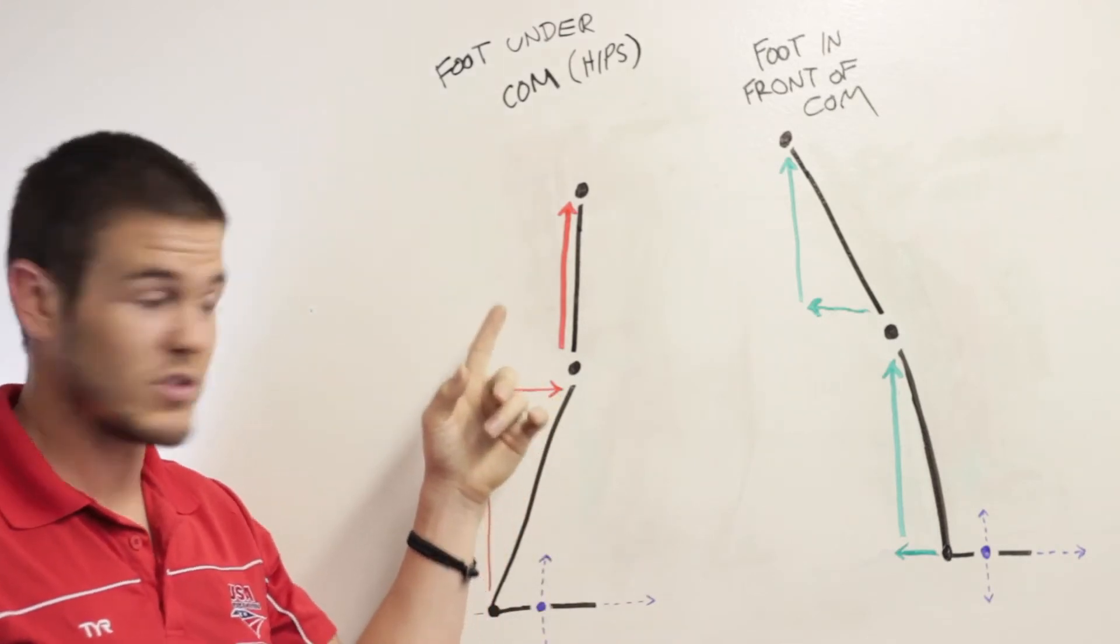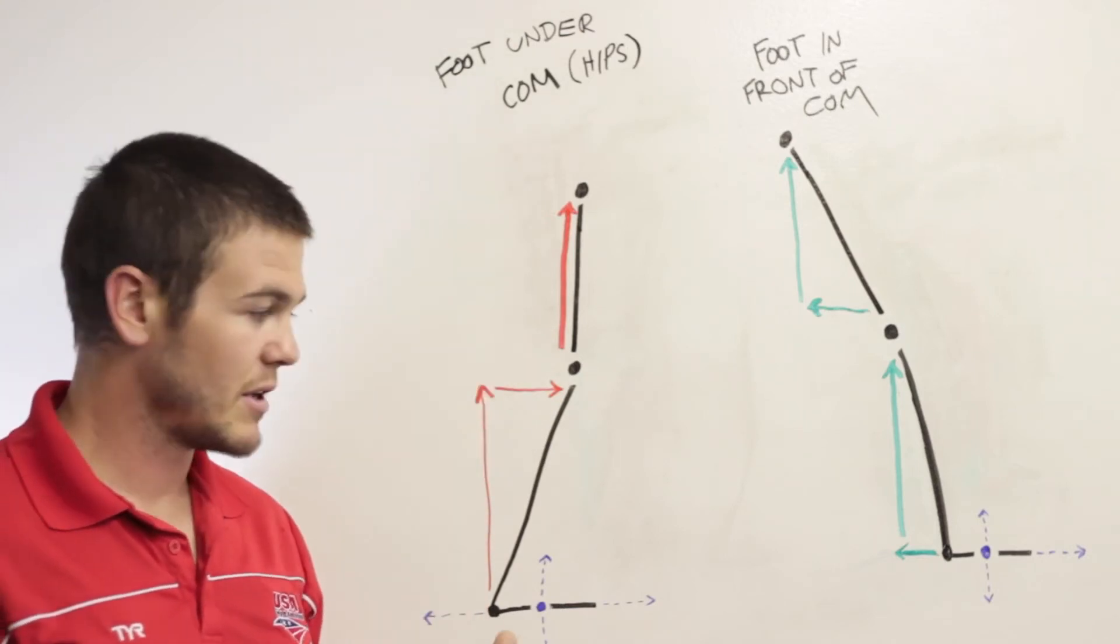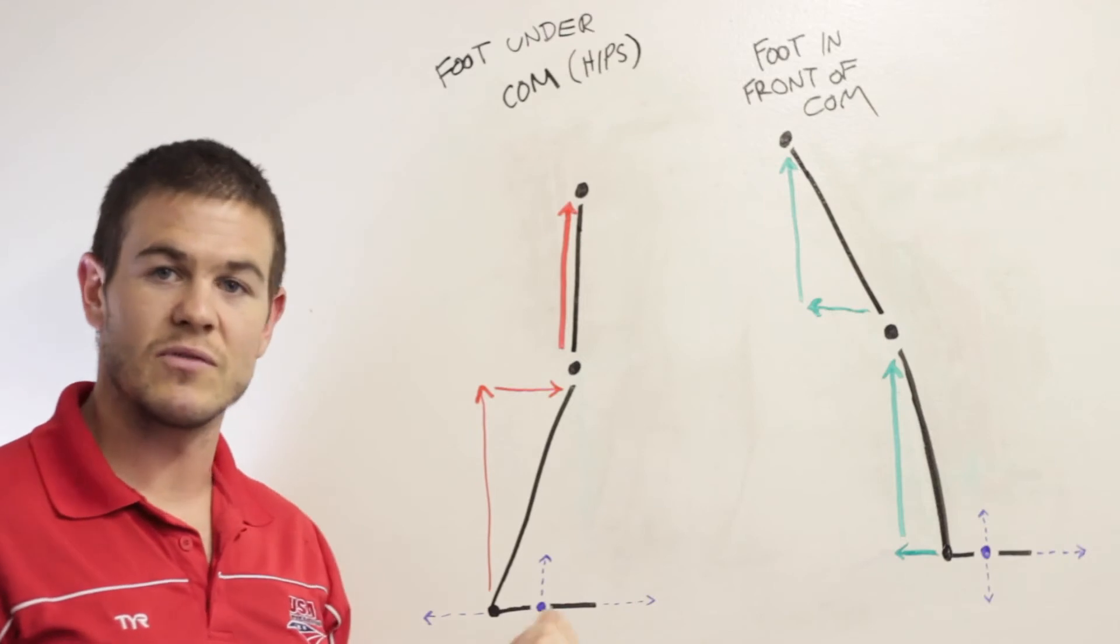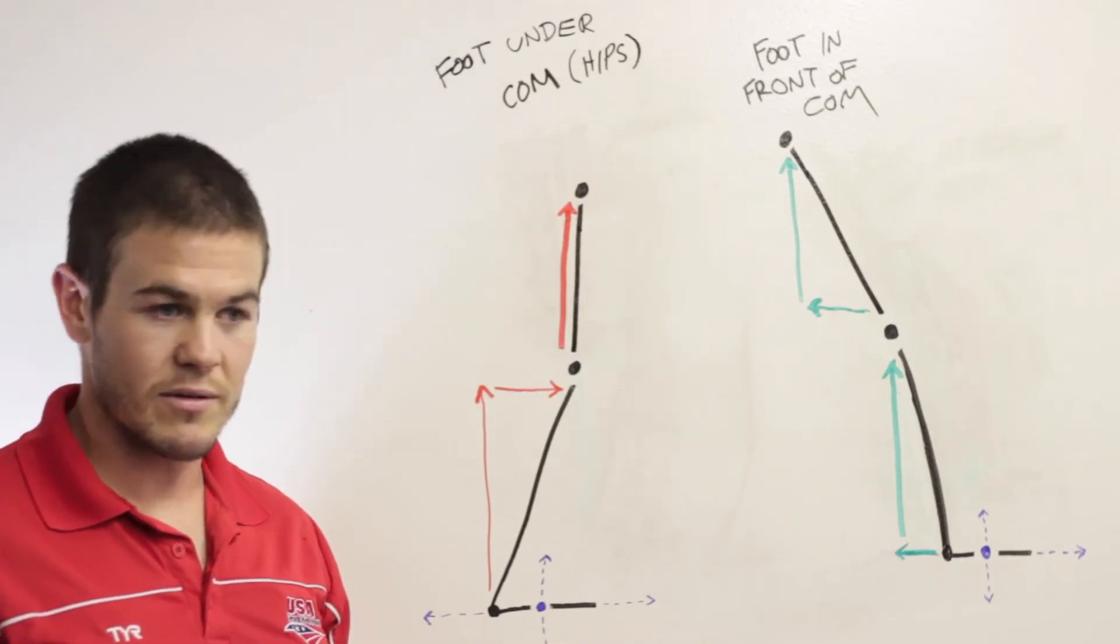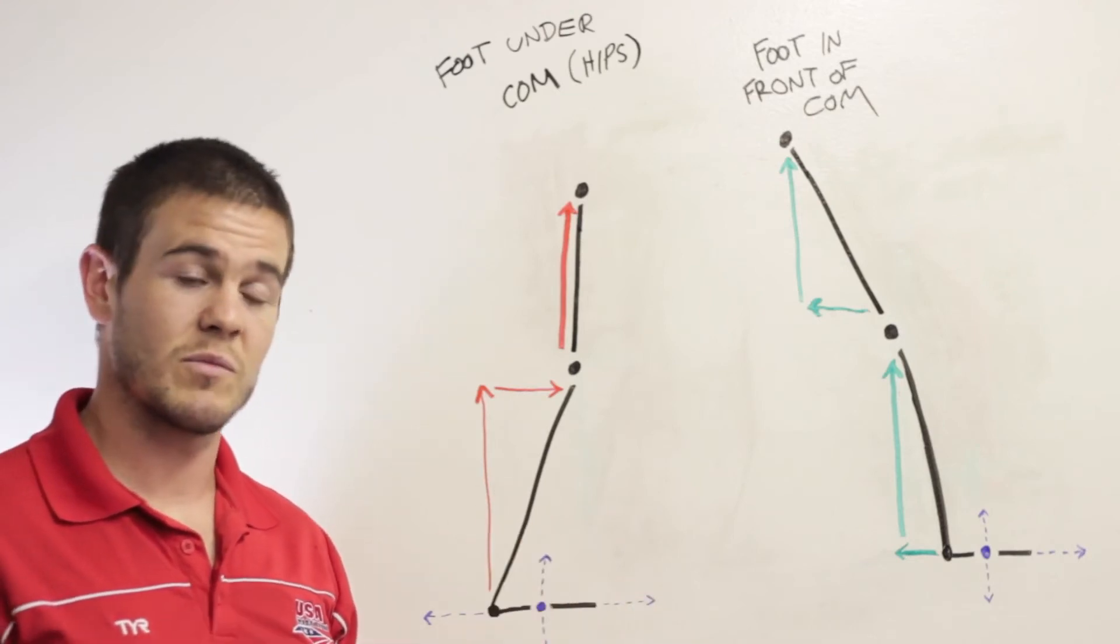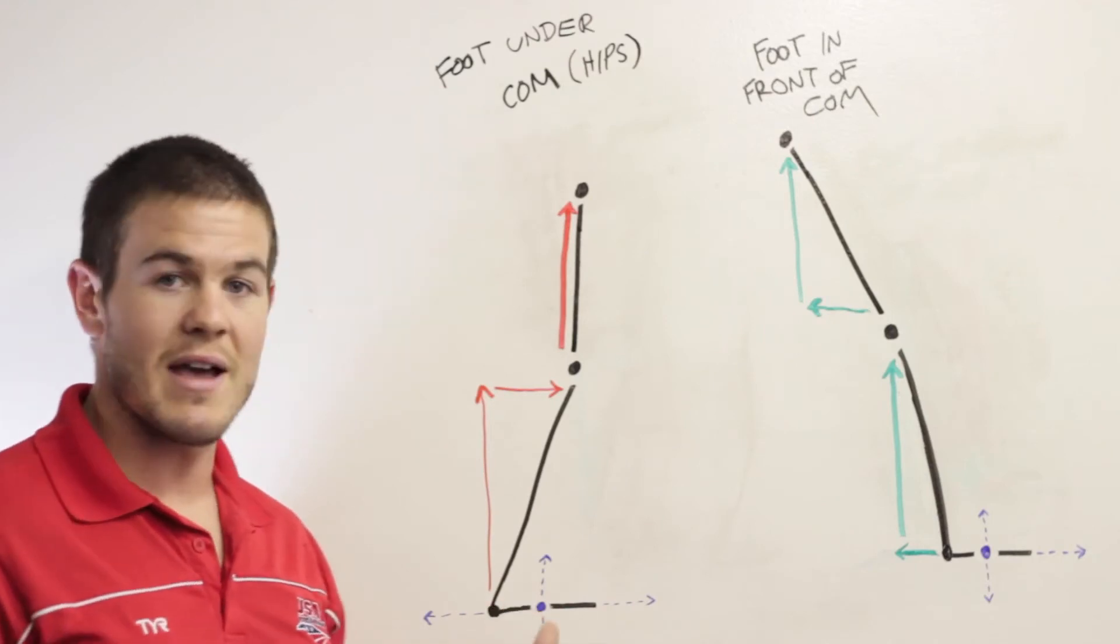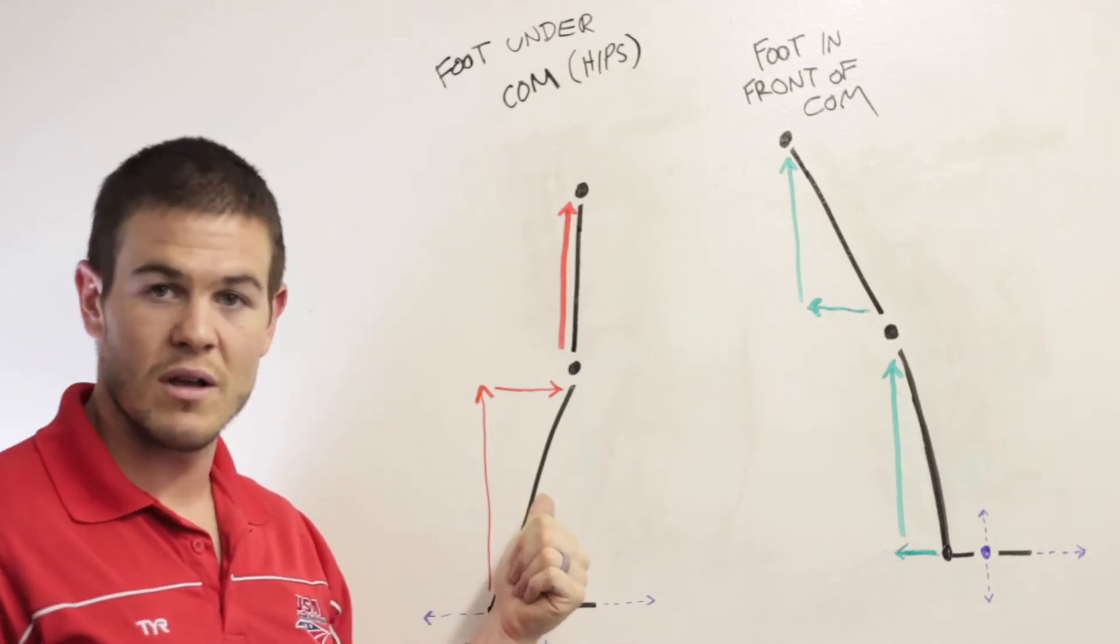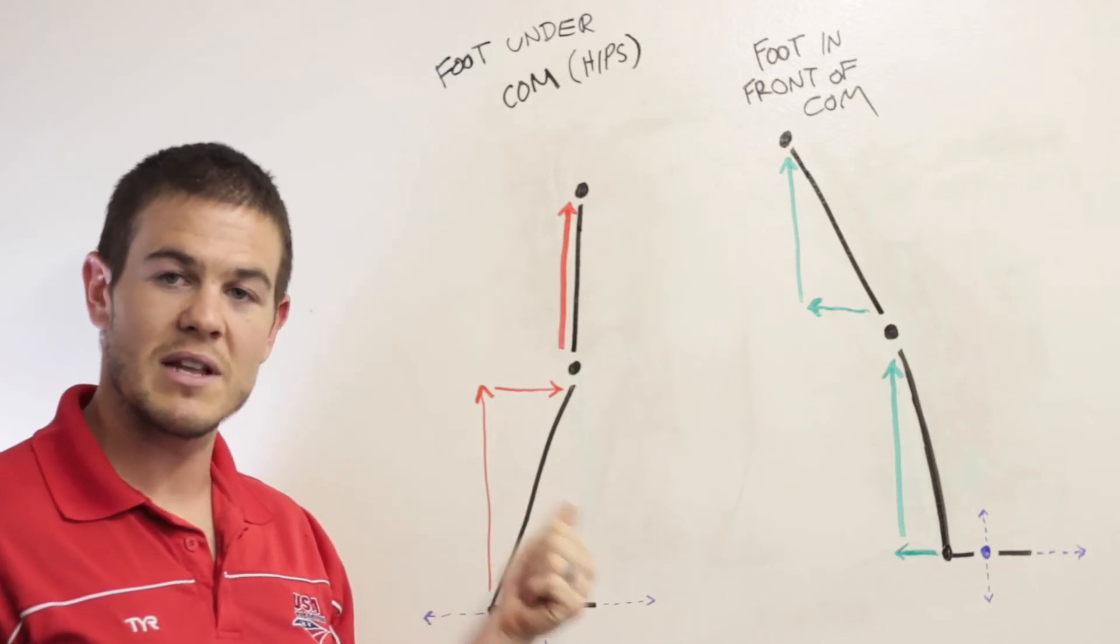Now, moving on, we'll go to foot landing position under your center of mass or under your hips. A similar thing happens. The foot is essentially at one point not moving. Friction, forces of gravity, force from the ground, it all kind of counterbalances. And a lot of that energy is then passed on to the tibia.